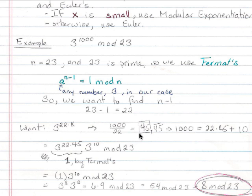However, the whole number here is what we want to pull from that, which I'm going to rewrite. 1,000 equals 22 times 45 plus 10.